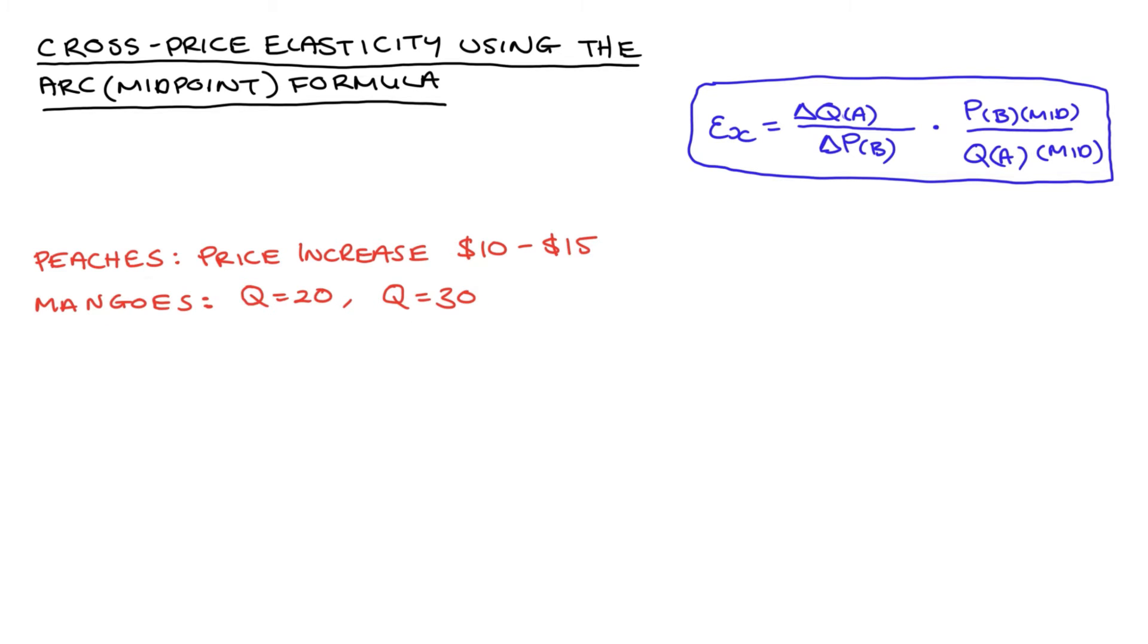And we can see straight away, if we want to apply the formula that I went through above, mangoes will be the good that's associated with the quantity change, so that's good A, and peaches will be good B, because the price of peaches is changing.